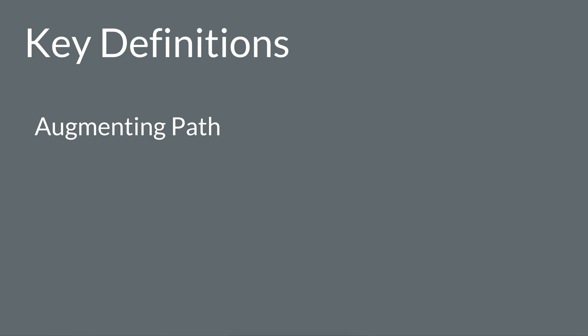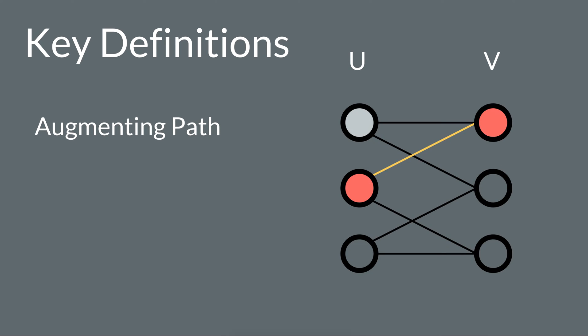An augmenting path starts on a free node, alternates between unmatched and matched edges, ending on a free node.